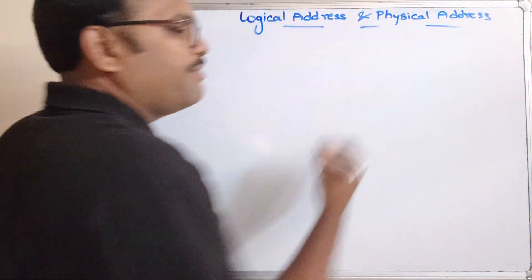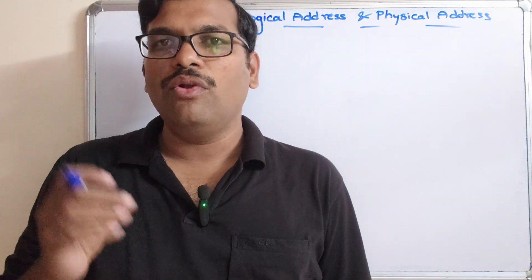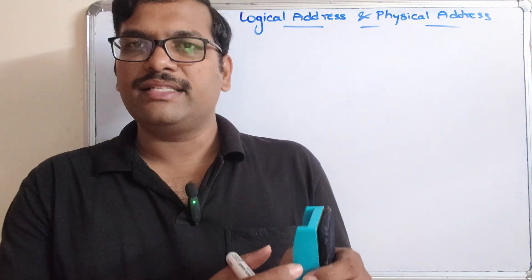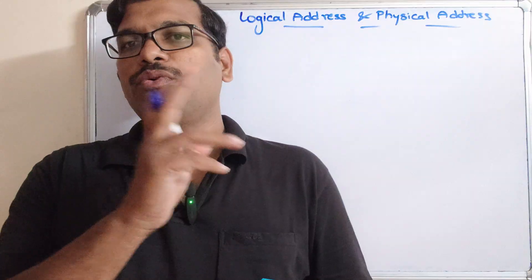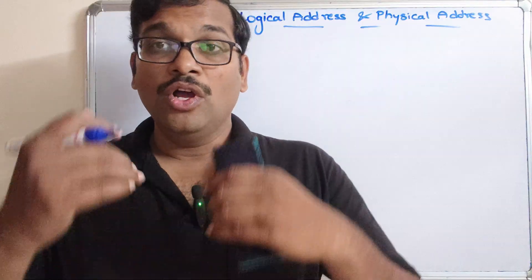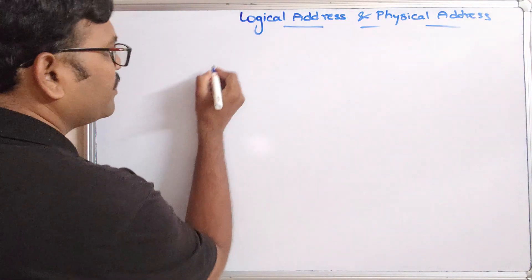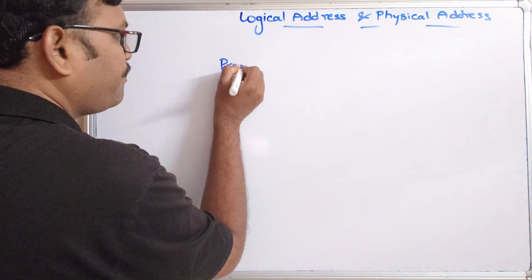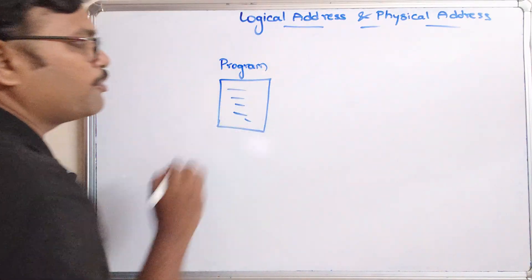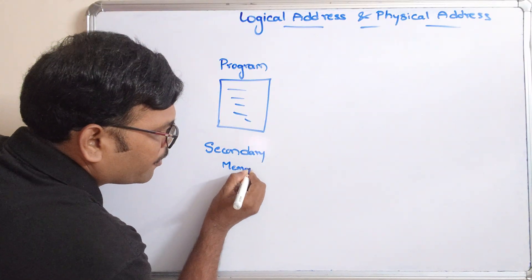Before seeing the difference, we need to understand that any program will be executed only by the CPU. Whatever programs we write are stored in secondary memory, and if we want to execute them, only the CPU can do that. The CPU will only access the main memory, while we store files and data in secondary memory. So let's take a program — this program will be stored in secondary memory.